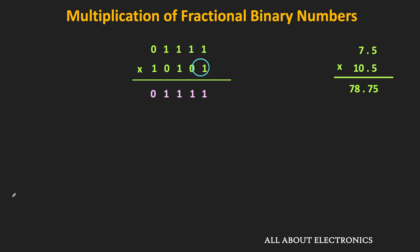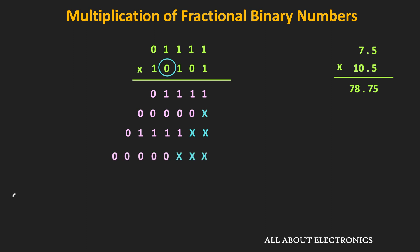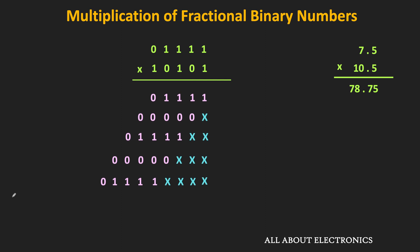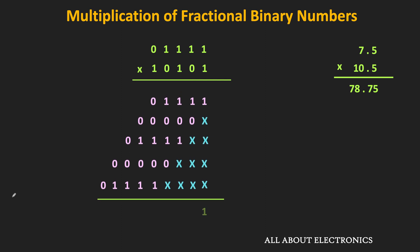Similarly, if we move to the next digit, that is equal to 0. Therefore, the second partial product will be equal to 0, but left shifted by 1 bit position. Then the next bit is equal to 1, so the partial product will be same as the multiplicand, but once again left shifted by 1 bit position. The next bit is equal to 0, so the partial product will be equal to 0. And the MSB is equal to 1, so the partial product will be same as the multiplicand but left shifted by 1 bit position. So we got all the partial products. If we perform the addition, this will be our final result.